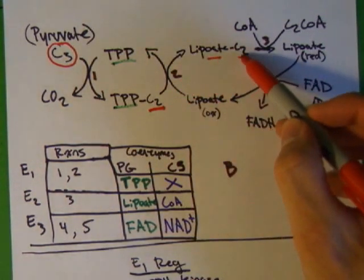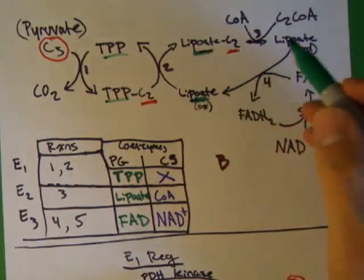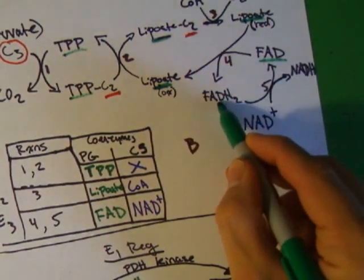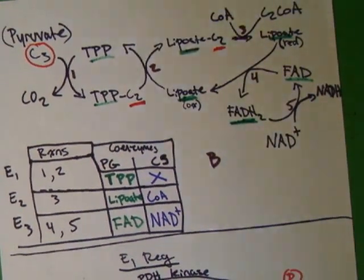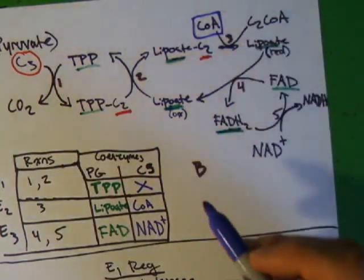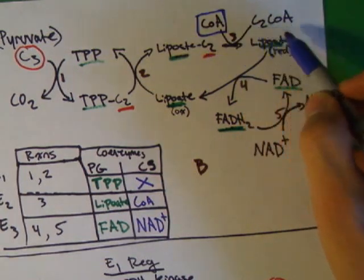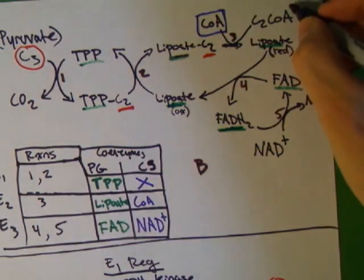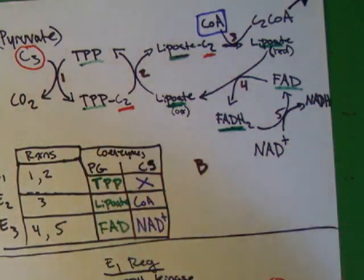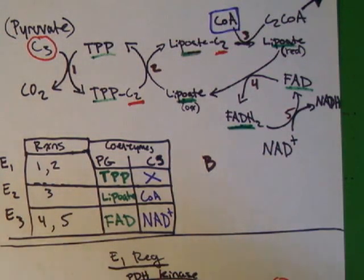So in the second reaction, lipoate takes the two carbons. I'm going to color code all these prosthetic groups. In reaction three, that's where the acetyl-CoA gets produced. So the CoA comes in, and that's the co-substrate. And it takes the two carbons from lipoate and makes acetyl-CoA. So now that acetyl-CoA is going to go off to the Krebs cycle. So reactions one, two, and three make the acetyl-CoA. Reactions four and five are kind of recycling the enzymes to reset the PDH complex for the next round of pyruvate that comes in.